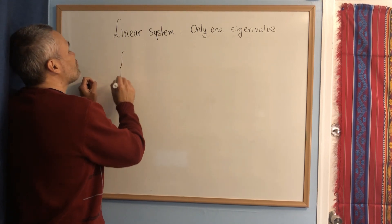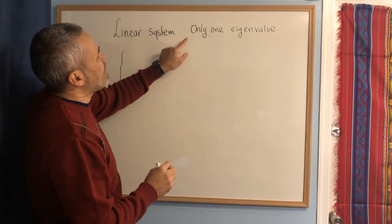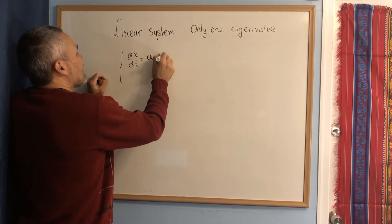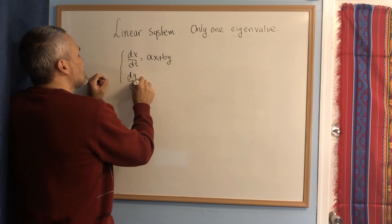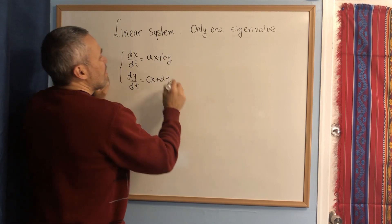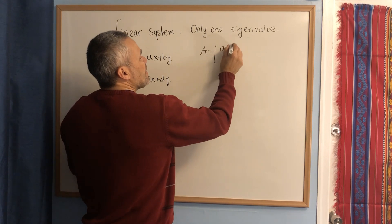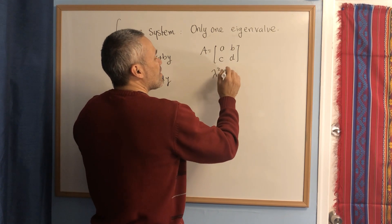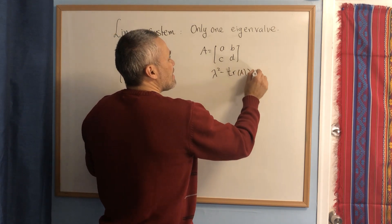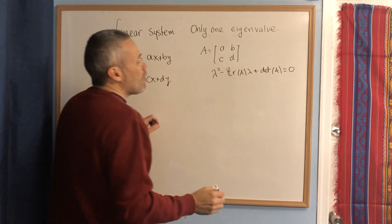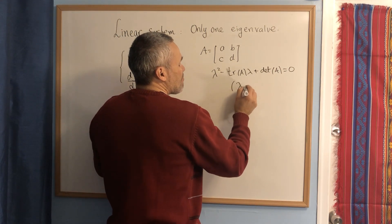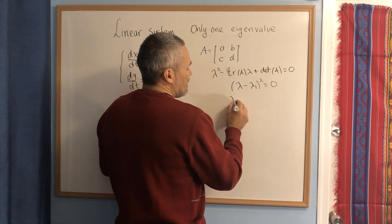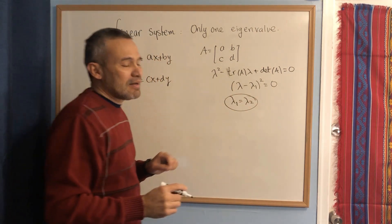In this video I will explain how to solve a linear system when we end up with only one eigenvalue. If we consider the linear system dx/dt = ax + by and dy/dt = cx + dy, and we write the characteristic equation λ² minus the trace of A times λ plus the determinant of A equals zero, we end up with something like (λ - λ₁)² = 0 — a perfect square — meaning λ₁ equals λ₂. We have only one real eigenvalue.